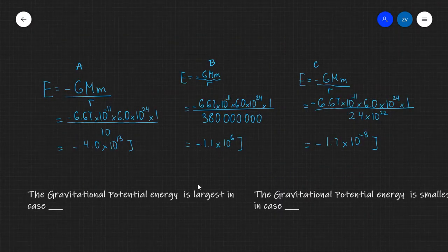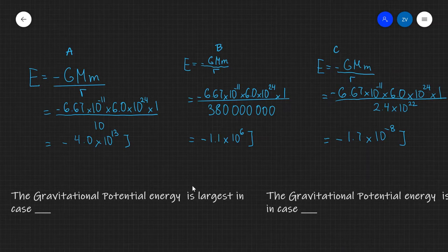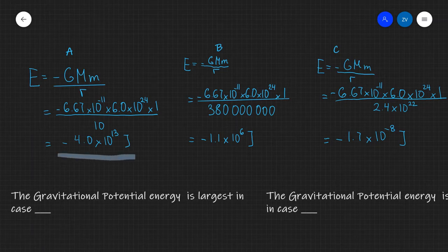Okay folks, so let's have a look at the answers. So for A at the distance of 10 meters the gravitational potential energy of this one kilogram mass with respect to the earth is going to be minus 4.0 times 10 to the power of 13 joules.